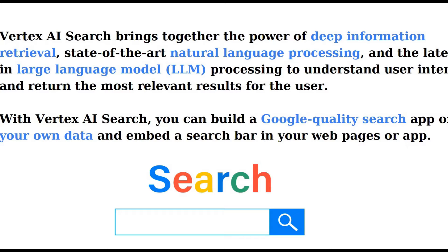Without wasting much time on the theoretical part, I will go to the Google Cloud Console and quickly see how we can build our own search engine. One more thing — you don't need to worry about cost, because if you are building it for the first time, Google provides a $1,000 credit for building your Vertex AI Search or GNI app. This is valid for one year and you can build search apps, conversation apps, and try hands-on with the GNI app builder.